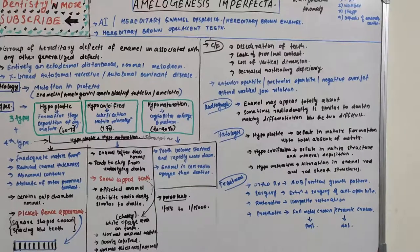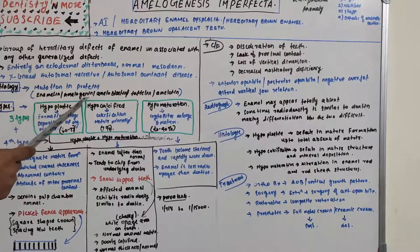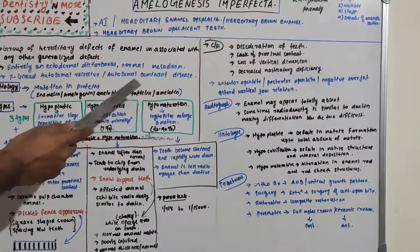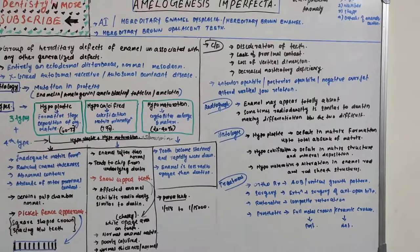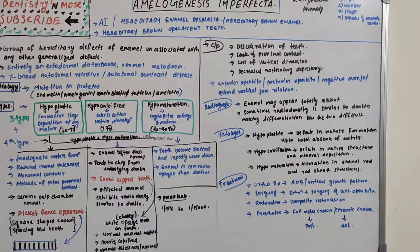The etiology is hereditary. There will be mutation in enamel-forming proteins such as enamelin, amelogenin, ameloblastin, tuftelin, or amelotin. Mutation in any of these proteins will create improper or imperfect enamel. Based on which stage of tooth formation is affected, there are basically three types of Amelogenesis Imperfecta.